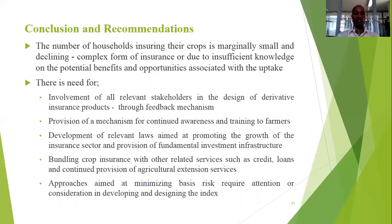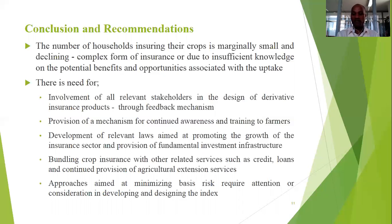Finally, there is a need to minimize basis risk. As you know, this is the major drawback for this type of insurance, whereby it is possible for a farmer to incur loss, and since the losses are not localized, the farmer will not be compensated. This can be reduced by reducing the size of the unit area of insurance, so as to increase homogeneity among farmers within that defined area of insurance.